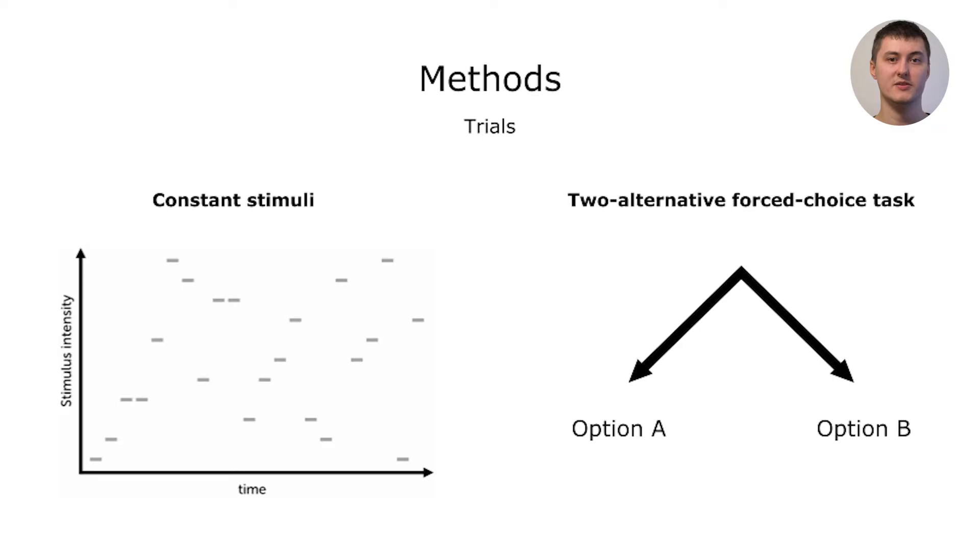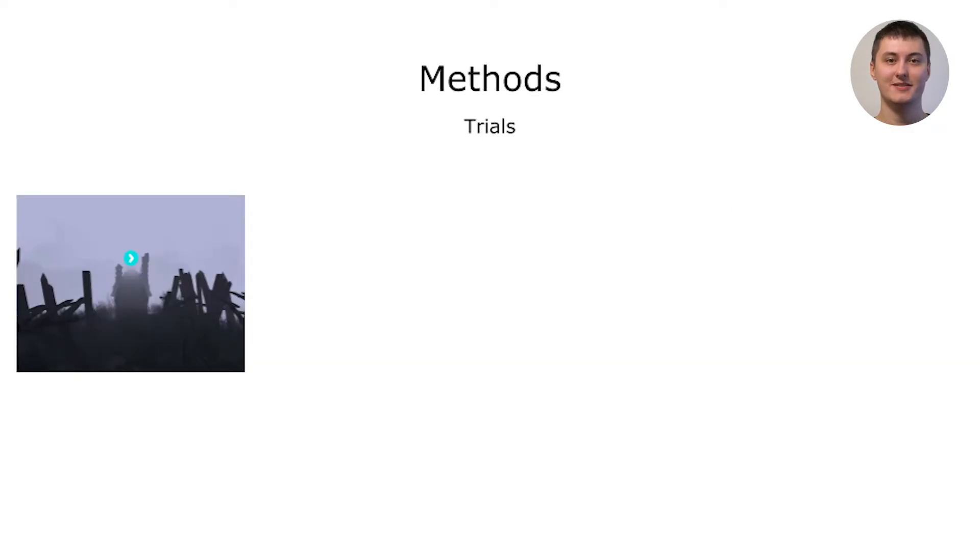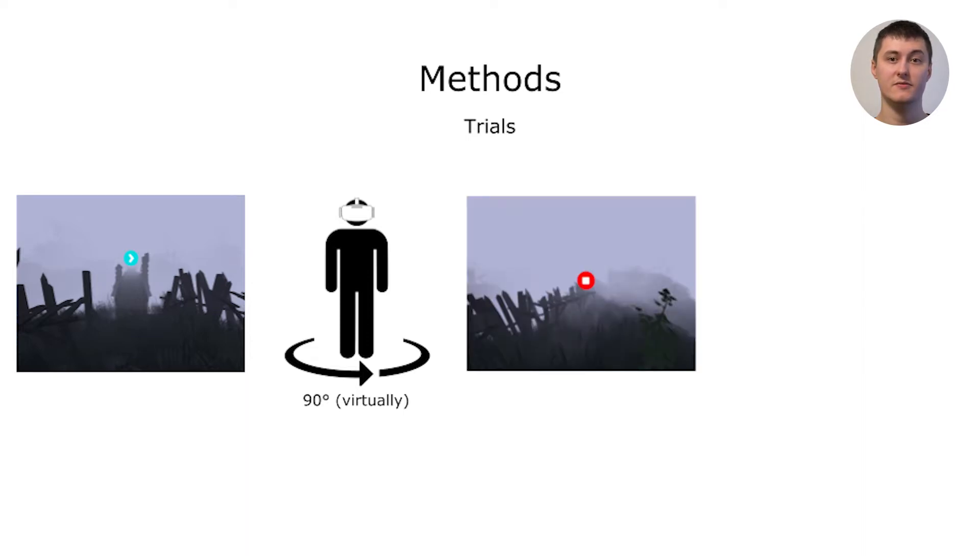Specifically, participants had to perform a series of rotations on the spot. Each trial started by showing an arrow sign in front of the participant, pointing either right or left at random, indicating the direction the participant should start rotating. They should rotate until they were facing a stop sign. Here participants stated verbally if they perceived their virtual rotation to be faster or slower than the physical rotation, after which the next trial was initiated.